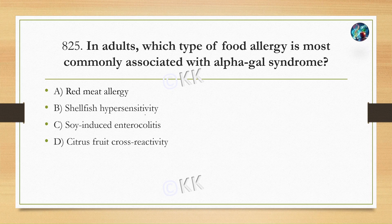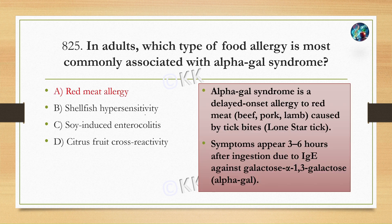Next question: in adults, which type of food allergy is most commonly associated with alpha-gal syndrome? Option A: red meat allergy. Option B: shellfish hypersensitivity. Option C: soy-induced enterocolitis. Option D: citrus food cross-reactivity. The correct option is A — red meat allergy. यह जो alpha-gal syndrome है, यह एक delayed allergic reaction है।